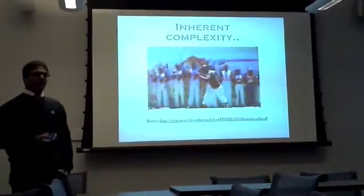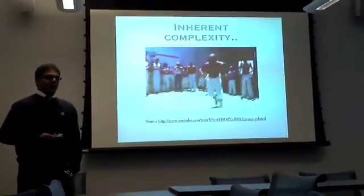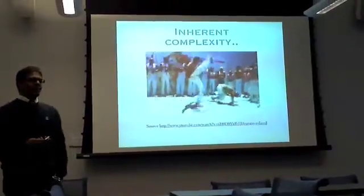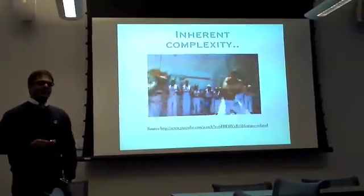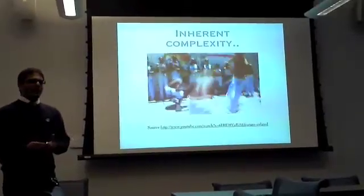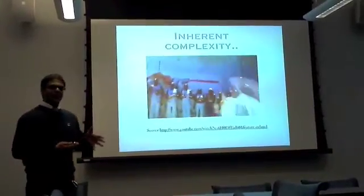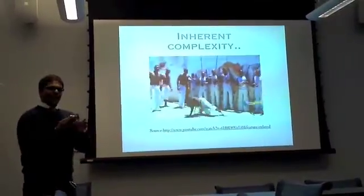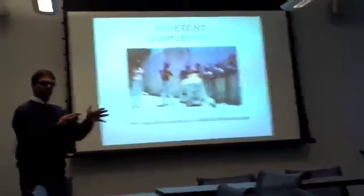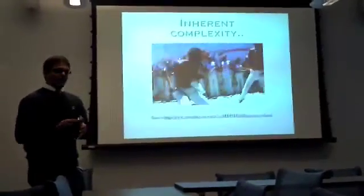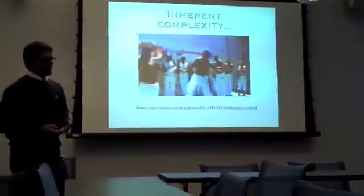Number one is human actions inherently are complex. We have many different ways of doing the same things, many different actions that we can perform, and the activity space is extremely large. Because of inherent complexity, it becomes difficult to categorize any particular action as belonging to one particular class or the other, and that is one aspect that makes machine recognition of activities a little contrived.